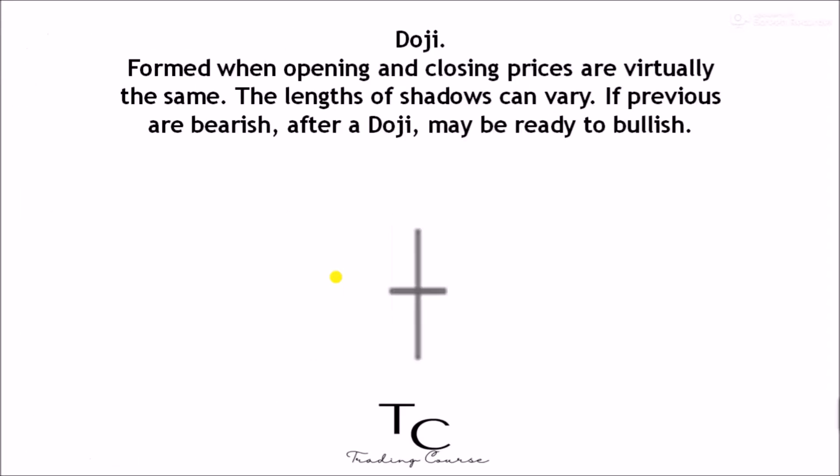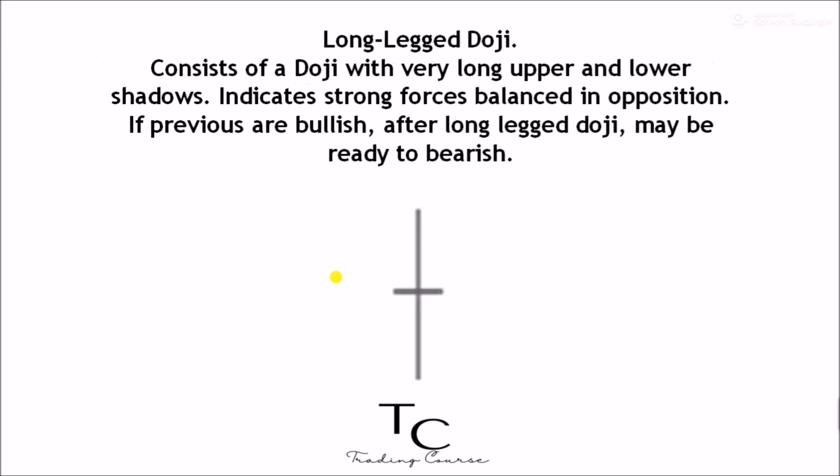White body — formed when the closing price is higher than the opening price. Considered a bullish signal. Doji — formed when opening and closing prices are virtually the same; the lengths of shadows can vary. If previously bearish, after a doji, may be ready to turn bullish. Long-legged doji — consists of a doji with very long upper and lower shadows, indicating strong forces balanced in opposition. If previously bullish, after a long-legged doji, may be ready to turn bearish.